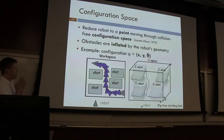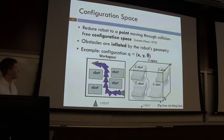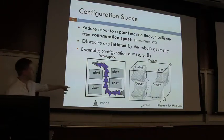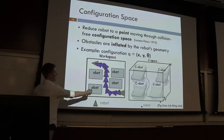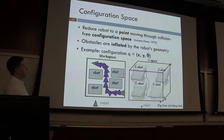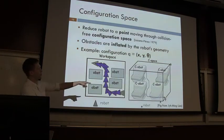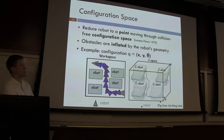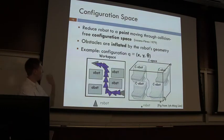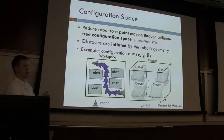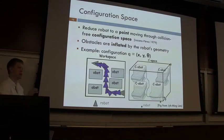A key insight in motion planning is reducing the problem of planning safe motions for a robot arm to planning for a single point. You transform the robot's workspace — where it actually lives — into a configuration space where the robot is represented by a point. In configuration space, objects are inflated by wrapping the robot's geometry around them, capturing all positions where the robot would collide. This simplifies the problem to planning for a single point rather than two complicated geometric bodies.